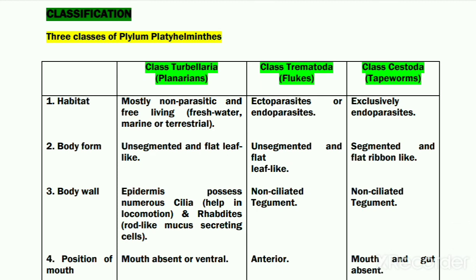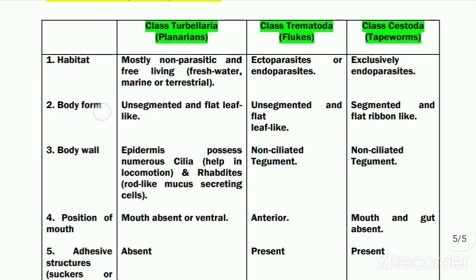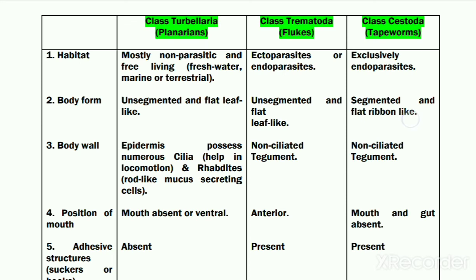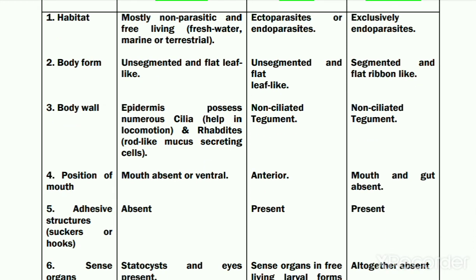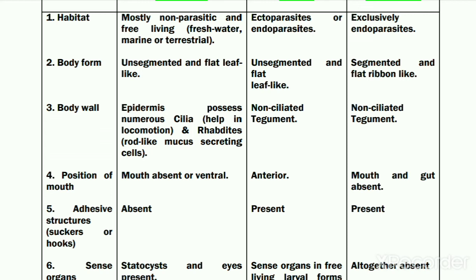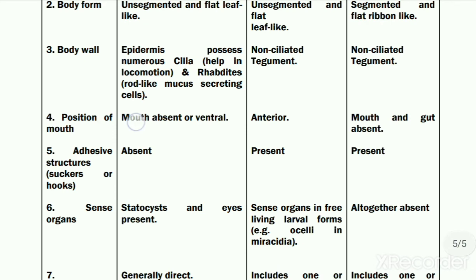Regarding habitat, most organisms of class Turbellaria are non-parasites, while organisms of class Trematoda and Cestoda are parasites. Regarding body form, the organisms of class Turbellaria and Trematoda have an unsegmented leaf-like body, while tapeworms show pseudo-segmentation with a ribbon-like body. Regarding the body wall, the tegument of turbellarians is ciliated and also has numerous rod-like mucous-secreting cells termed rhabdites. Rhabdites and cilia are not present in the tegument of flukes and tapeworms.